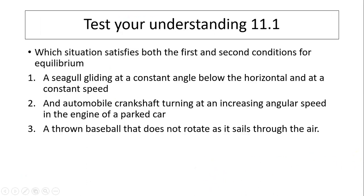Test your understanding. Which situations satisfy both the first and second conditions for equilibrium? Situation one, a seagull gliding at a constant angle below the horizontal and at a constant speed. Because both the angle and speed are constant, that means velocity is constant. Net force has to be zero. Second of all, because velocity is constant, so there is no rotation, that means net torque equals to zero. So situation one satisfies both conditions.